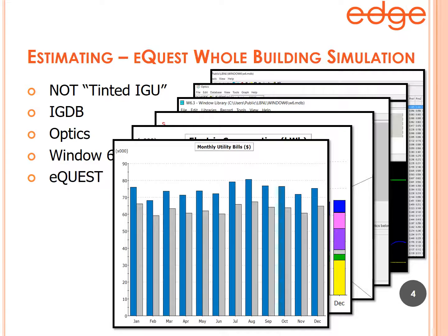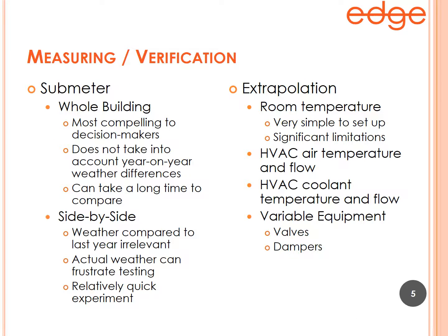Electric results can be broken down into consumption and demand, and gas into just consumption. All of this shows that our estimation is significantly more detailed, and those details are significantly more understandable than a spreadsheet or a back-of-the-envelope calculation.